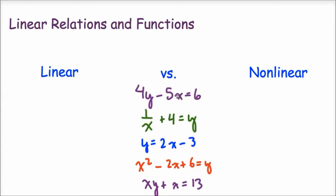So the first, 4y minus 5x equals 6, that is going to be a linear equation, because if we were to graph this we would end up with a line. And the important thing to note, we're going to talk about this in a little bit, this is close to being in standard form, which is going to be ax plus by equals c.